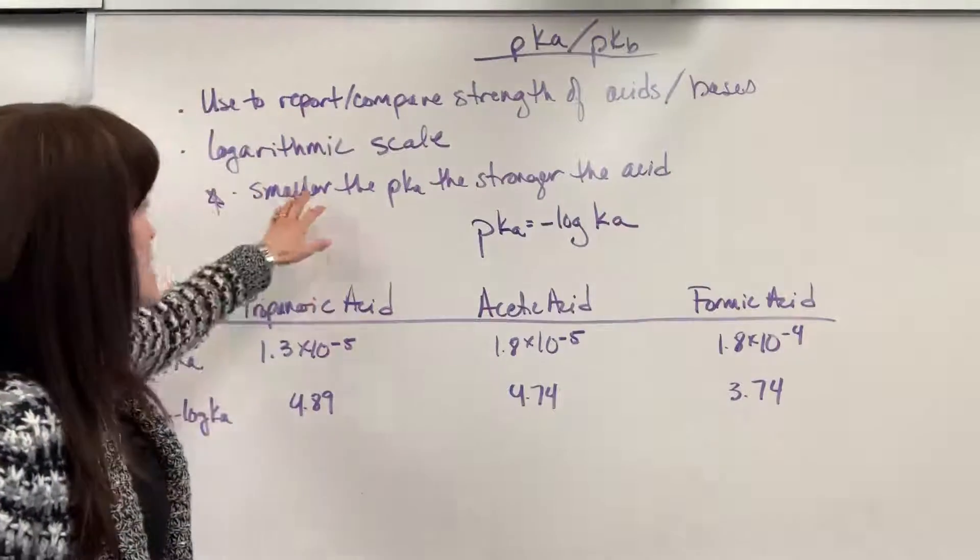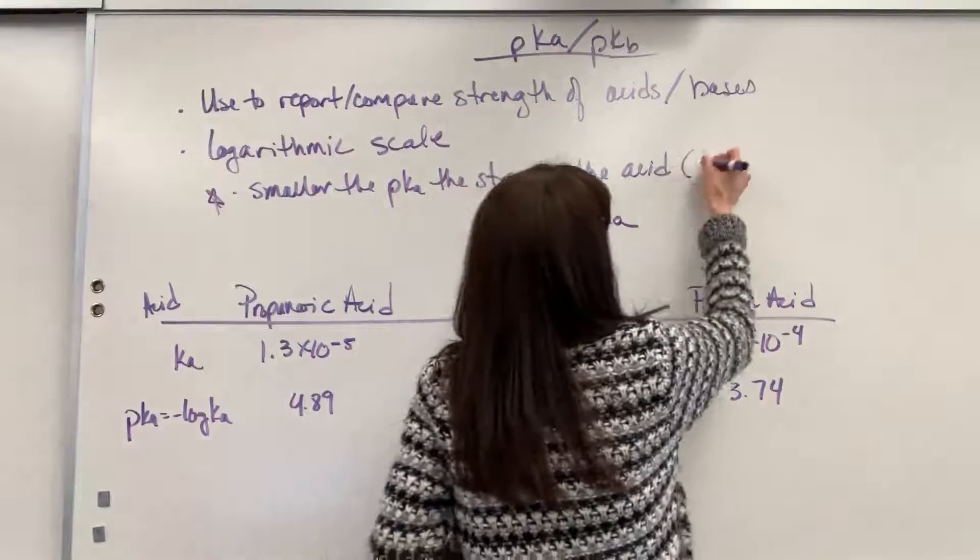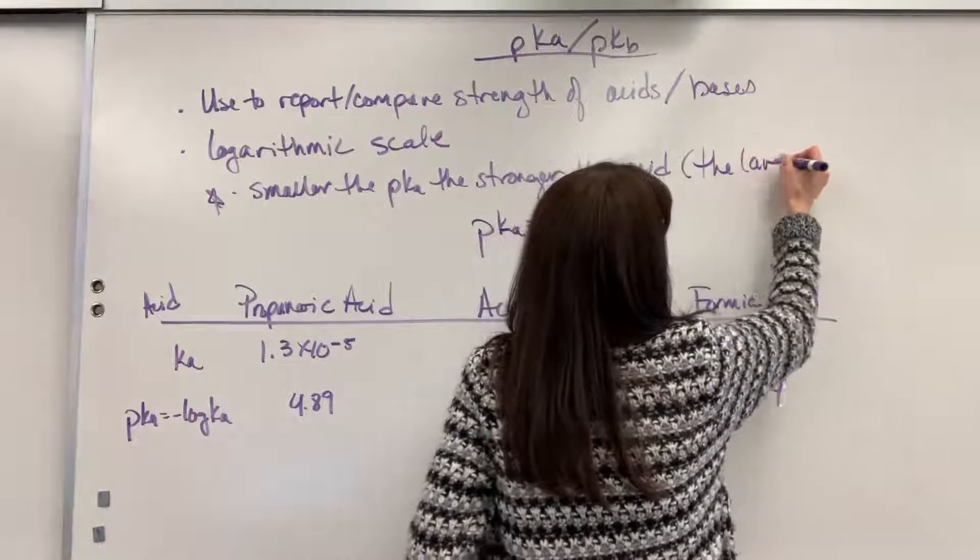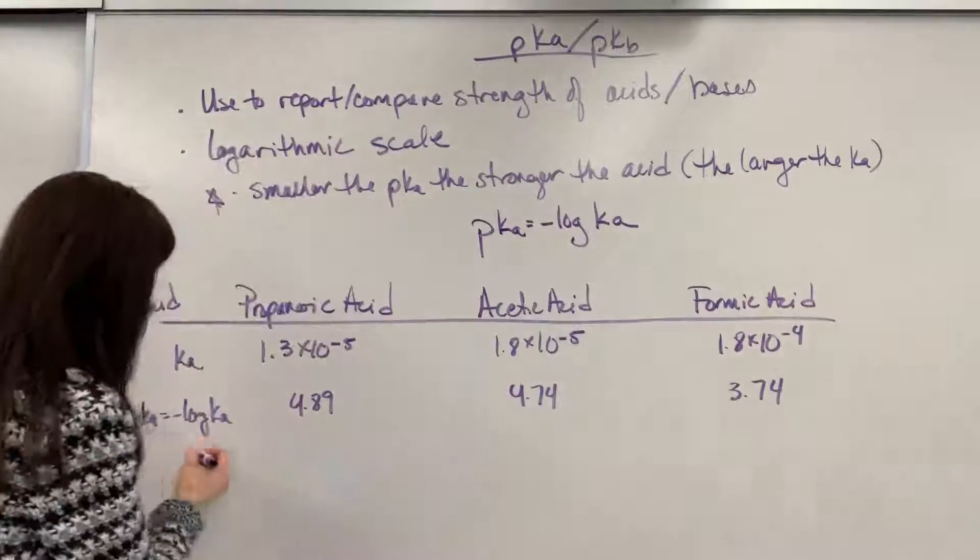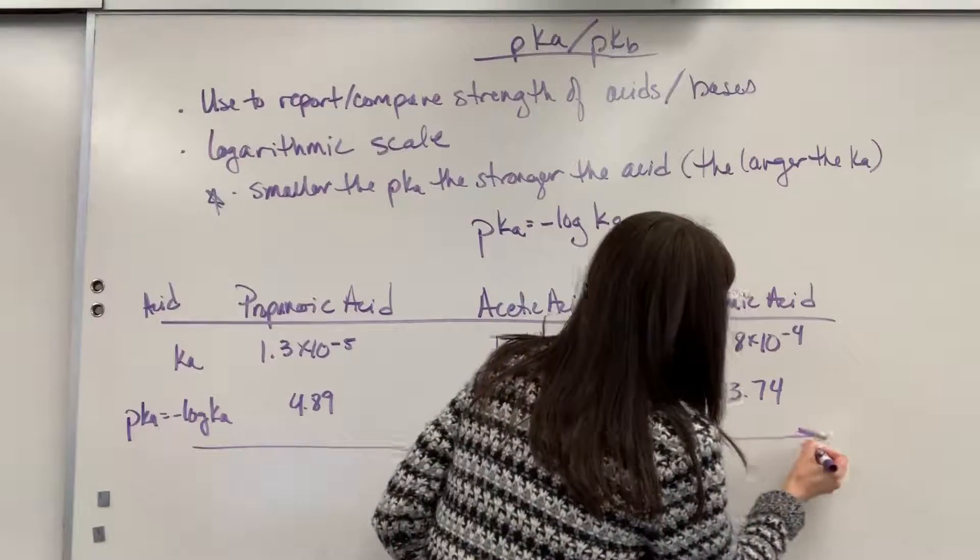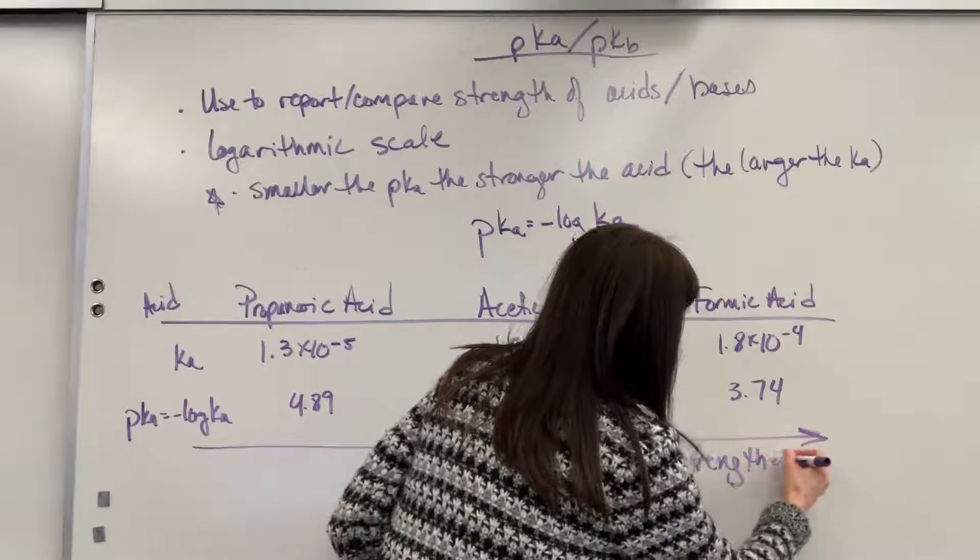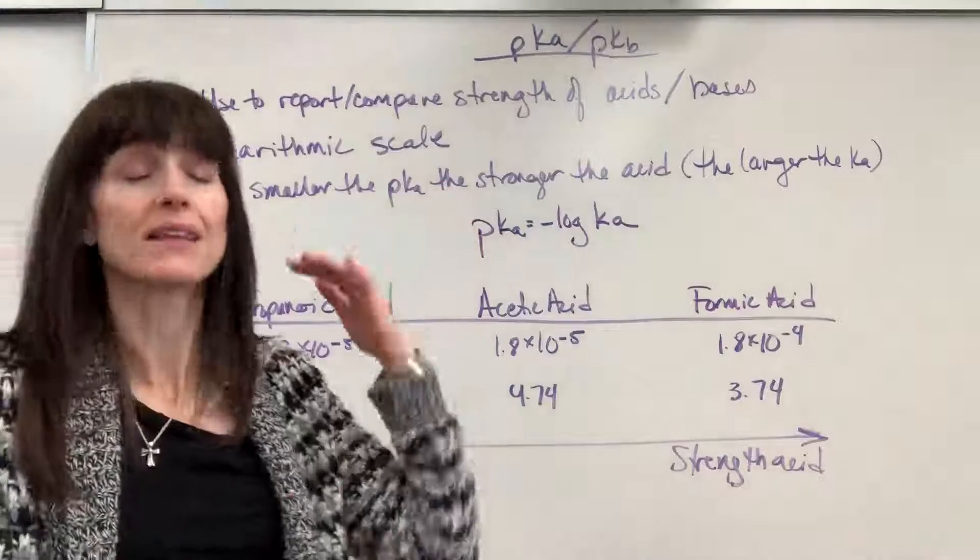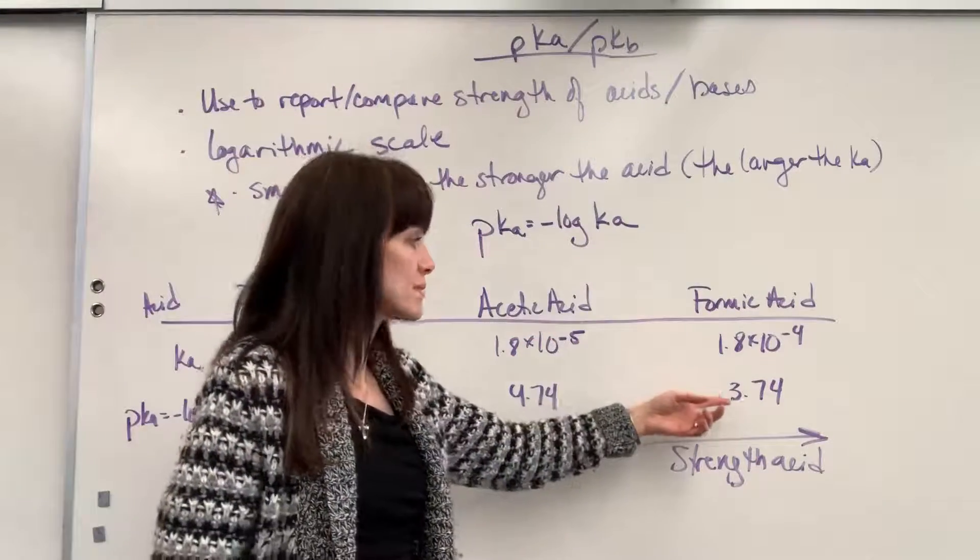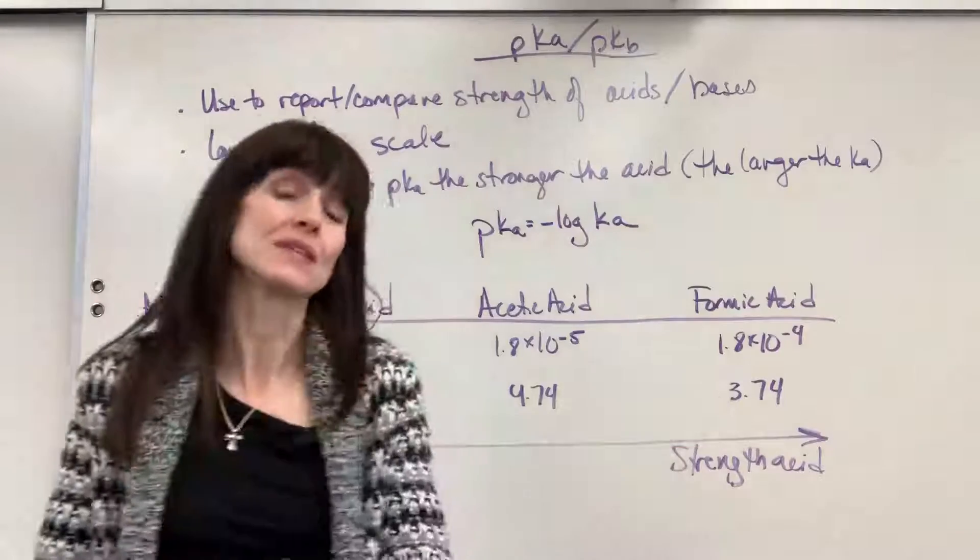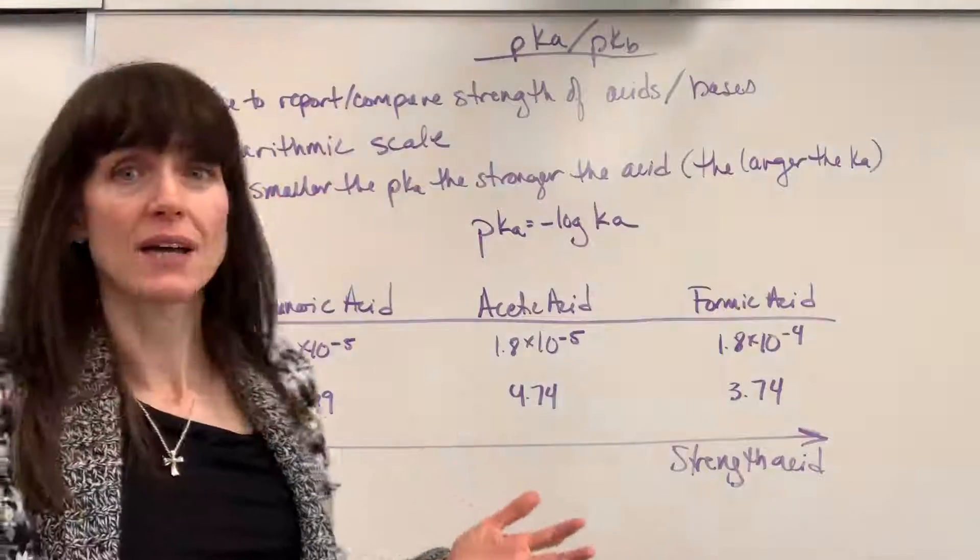It's a really big takeaway. The smaller the pKa, the stronger the acid. I also could put here, the larger the Ka, and so I could do a great big arrow that this is going to be increasing strength of that acid. So again, I think this is my fourth or fifth time. The bigger the Ka, the smaller the pKa. So the smaller the pKa, the stronger the acid.